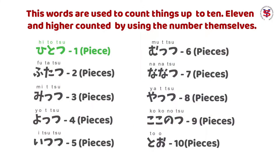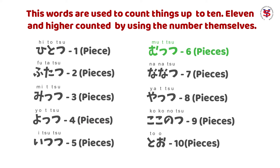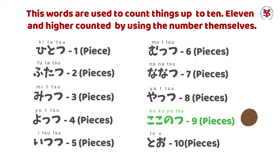So let's start with the most basic counter words. One of something is hitotsu. Two of something is futatsu. Three is mittsu. Four, yottsu. Five, itsutsu. Six, muttsu. Seven, nanatsu. Eight, yatsu. Nine, kokonotsu. And lastly, ten is to.